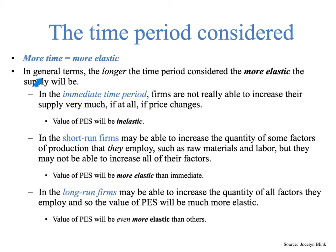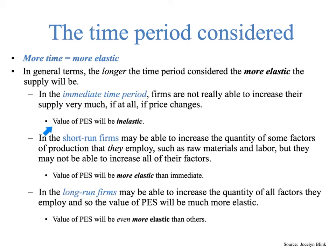The second major determinant is the time period considered. Very basically, the more time — the longer the time period — the more elastic the supply. In the immediate time period, which usually means now or up to a month, firms are not really able to increase their supply very much, if at all, if prices change. Therefore the value of PES would be relatively inelastic.